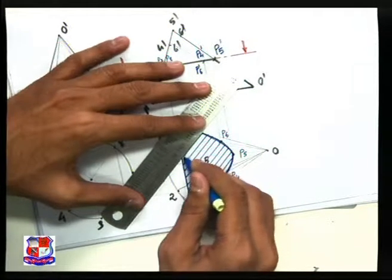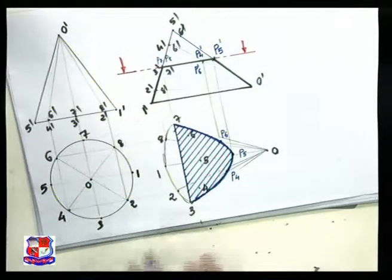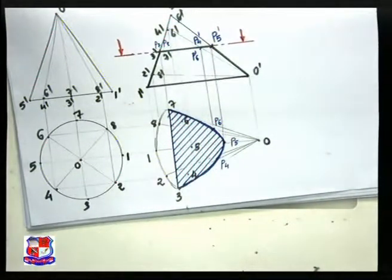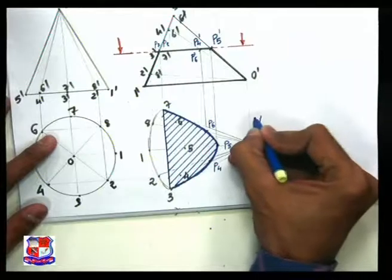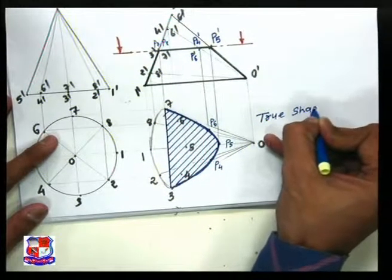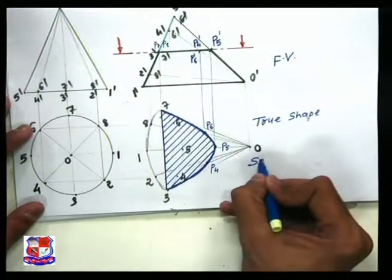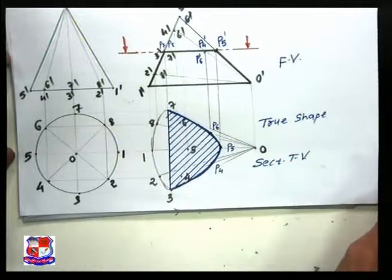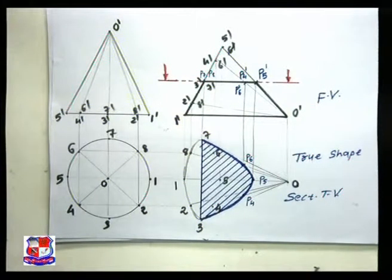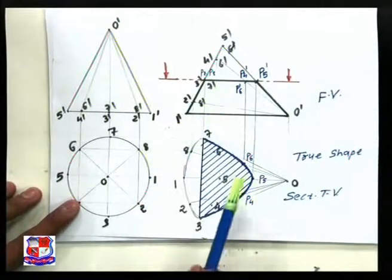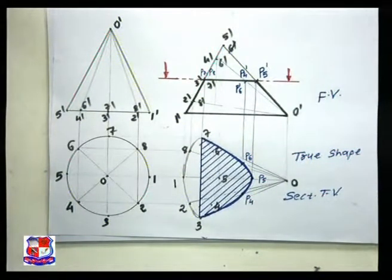The distance between each line should be the same and we should write the name of respective views. This parabola represents the true shape of the section — the cutting plane is parallel to the x-ray line. This is the front view and this is the sectional top view. This is the solution of the problem. Seven marks are allocated: two marks for the front view, two marks for the sectional top view and true shape, and one mark for naming the three views and dimensions.